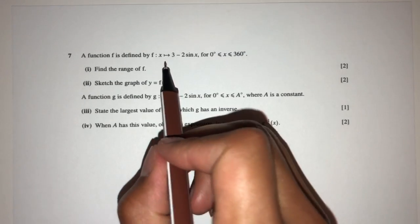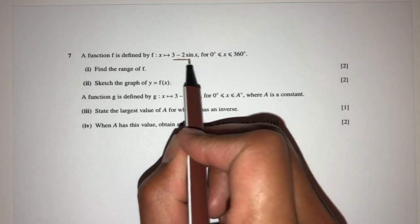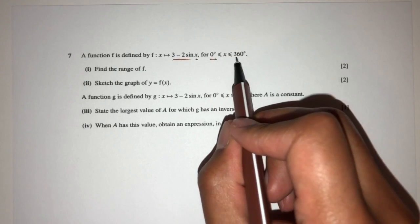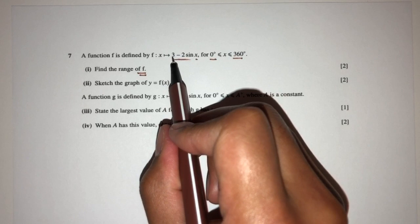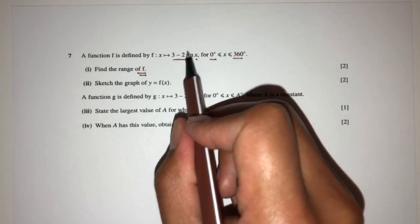The function f is defined by f of x is equal to this for the values of x between 0 and 360. Now find the range of f, so pretty easy. So 3 is a constant, 2 is a constant, so only this changes.